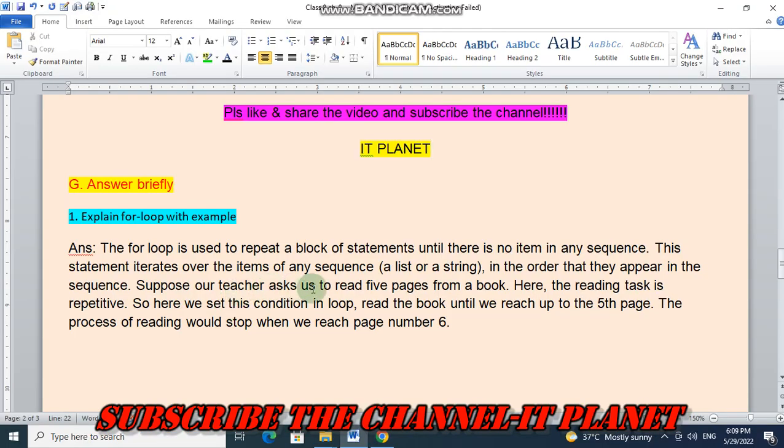Here the reading task is repetitive, so we set this condition in a loop: read the book until we reach up to the fifth page. The process of reading would stop when we reach page number six. So this is the explanation of for loop.